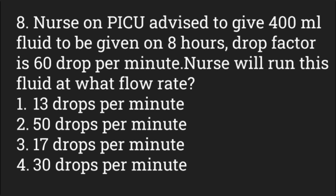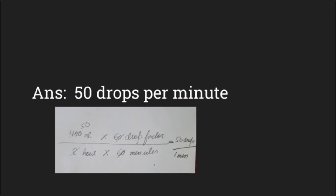A nurse in a PICU is advised to give 400 ml of fluid over eight hours. The drop factor is 60 drops per minute. At what flow rate should the nurse run this fluid? Options: 13, 50, 17, or 30 drops per minute. The answer is 50 drops per minute. Using the formula: 400 ml over 8 hours with a drop factor of 60 drops per minute and 60 minutes per hour gives 50 drops per minute.